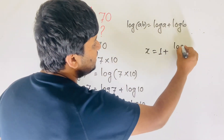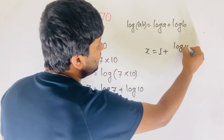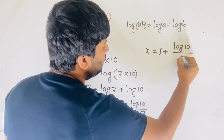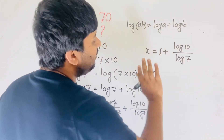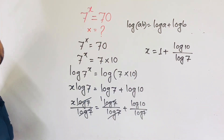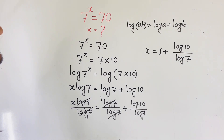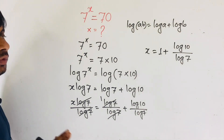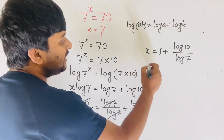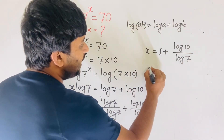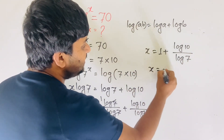So x equals 1 plus log10 over log7. This is our final symbolic answer for this exponential equation. Now, using a calculator, we can find the numerical value.